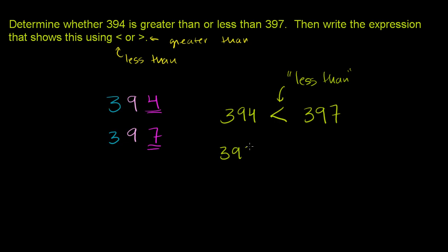We could write 397 is greater than 394. And once again, the bigger number is on the side that this little thing is opening onto, or the side that has the bigger side of this symbol. This point is the smaller side. This out here is the bigger side. That's where you put the larger number. Greater than, less than.